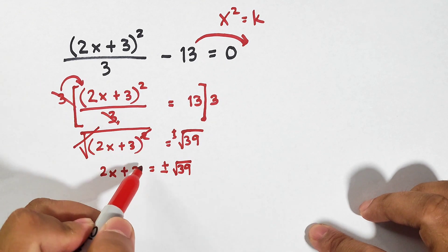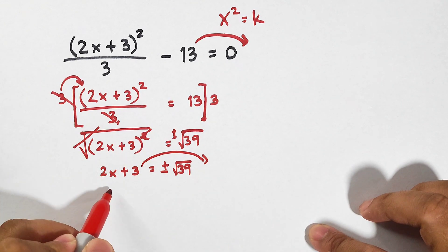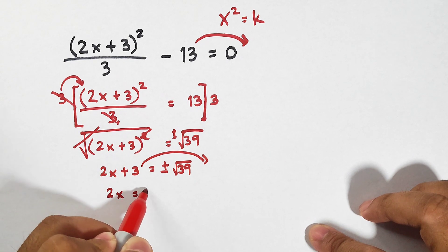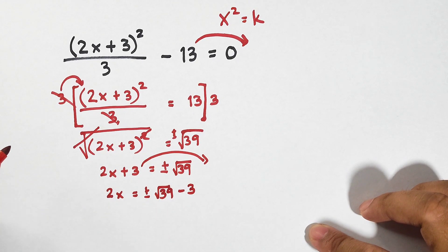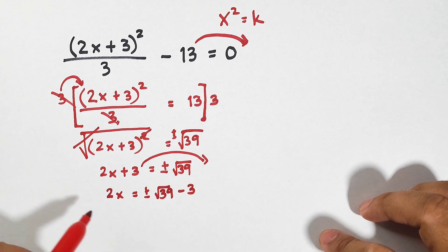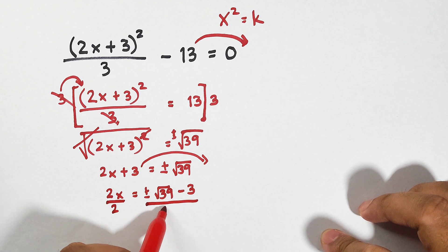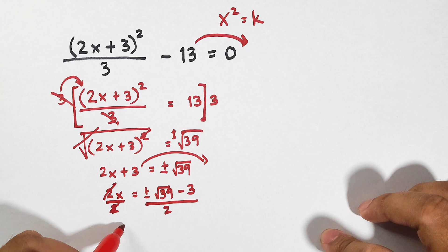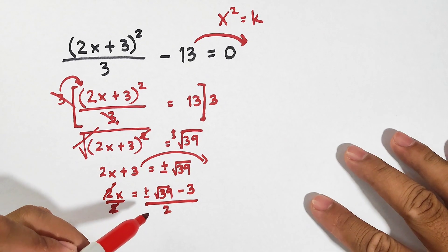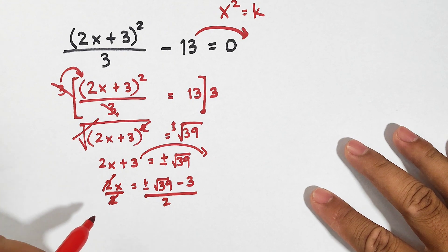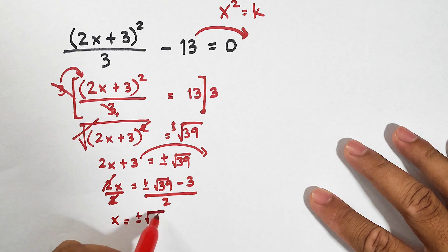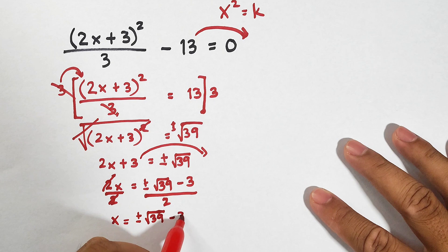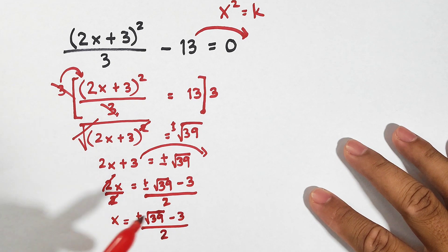Now, next we will transpose this to the other side of the equation. It will become 2x is equal to positive negative square root of 39 minus 3. And lastly, we're solving for x. Divide both sides by 2. Cancel, cancel. Your x is equal to positive negative square root of 39 minus 3 over 2.